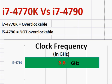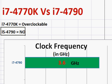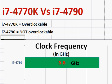In this video we will compare the Intel Core i7-4770K with the i7-4790. The first thing you need to know is the suffix 'K' denotes that this processor is overclockable. The i7-4790 is not overclockable. So depending upon your requirement you may want to prefer the overclockable one or the non-overclockable one.